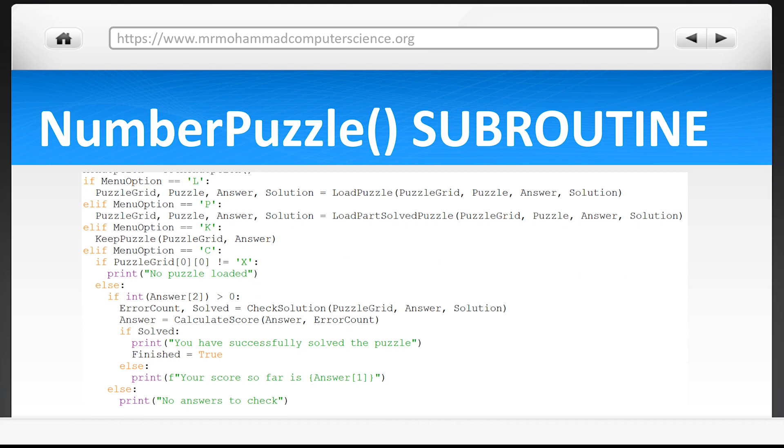However if it's not, it presents the score to the user. If this nested if condition is not met at all, which is the condition of answer index 2 being greater than zero, then it means there are no answers to check so this message is shown to the user.